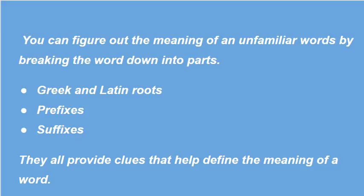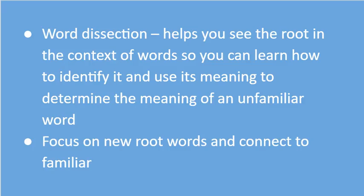How can you figure out the meaning of an unfamiliar word? You can do it by breaking down its parts — by the prefix, by suffix, and then you can end up with the Greek or Latin root that you are left with. Each one will provide a clue to help you define the meaning of a particular word. What you want to do is called word dissection. You dissect it, break down those parts, learn what the root is, and identify it to figure out the meaning of an unfamiliar word. Try to focus on new root words and connect them to familiar root words that you already know.